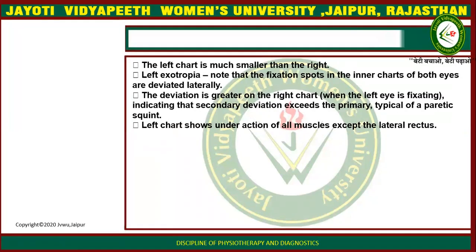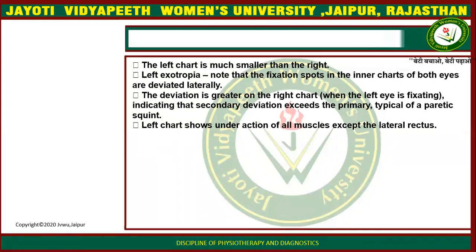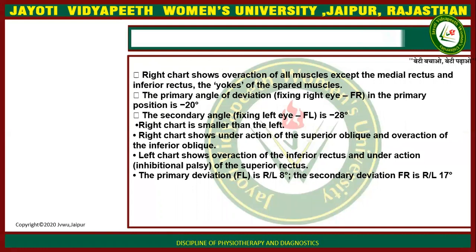In an example of left exotropia: the left chart is much smaller than the right chart. Note that the fixation spots in the inner chart of both eyes are deviated laterally. The deviation is greater on the right chart when the left eye is fixating, indicating that the secondary deviation exceeds the primary — typical of a paretic squint. The left chart shows under-action of all muscles except the lateral rectus, and the right chart shows over-action of all muscles except the medial and inferior rectus.